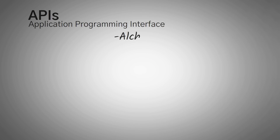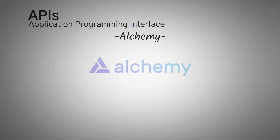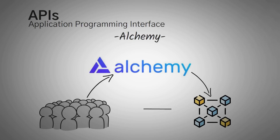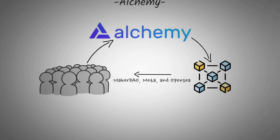Last, we have Alchemy. Alchemy claims to be an entire Web3 development platform. Many people use it to get simple information about the blockchain, including companies like MakerDAO, Meta, and even OpenSea. They have APIs for a ton of blockchains, and I found them referenced a ton in Stack Exchange questions.